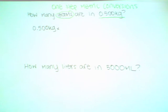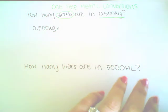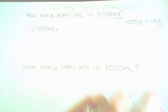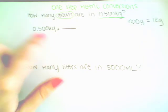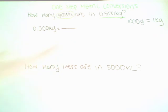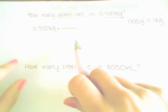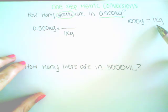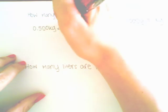To start, you write the given information, and we will be multiplying this by the conversion factor, which will be written as a fraction. There are one thousand grams in one kilogram. Whichever unit you find on the top of the first step needs to go into the bottom of the next step — this allows us to cancel out those units. So if I have kilograms on the top, kilograms goes on the bottom of the next step: one kilogram. So there's one kilogram per one thousand grams, and one thousand grams goes on the top.